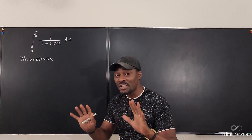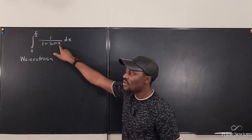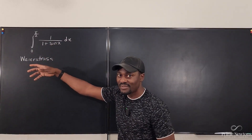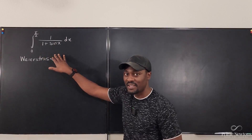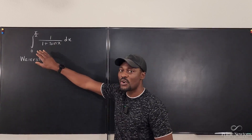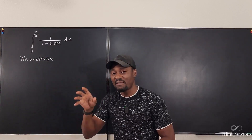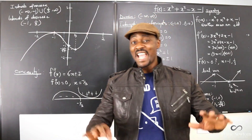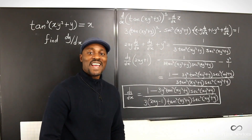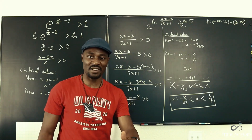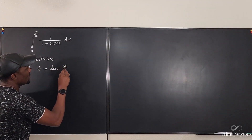It's a t-substitution. It simply says: if the denominator of an integral has a linear combination of sine or cosine — just sine or cosine, not sine squared, not cosine squared — whether you have a multiple of it, maybe it's three, or you have cosine, just do a t-substitution where t is the tangent of the half angle x.